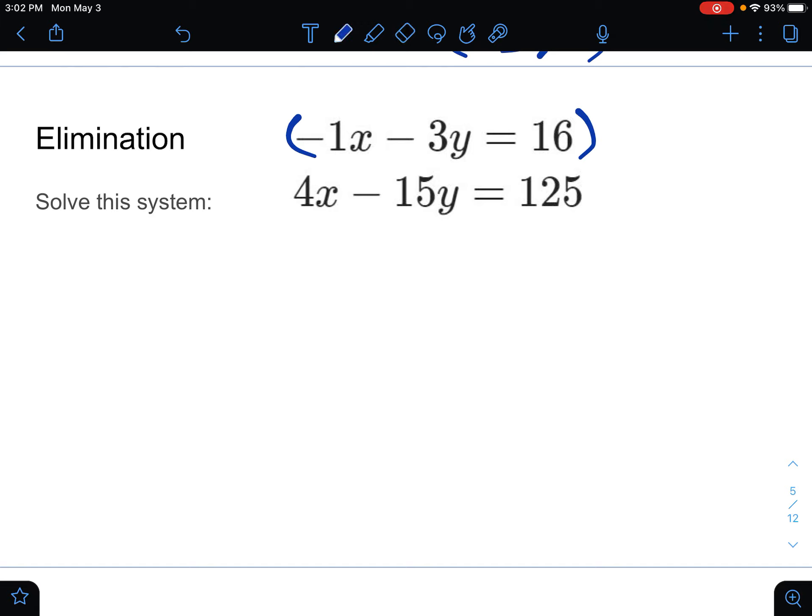So for the top, I'm going to multiply that by a negative 5. The reason is that'll make it a positive 15y up top, which will cancel out with the bottom negative 15y. So multiplying the whole top by negative 5 is going to make it 5x plus 15y equaling negative 5 times 16 is negative 80.